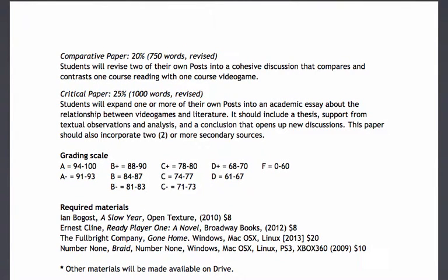The comparative paper is going to be your first major paper, due at the beginning of week five. We're going to workshop it during week five and then you'll turn in a second draft. That's going to be 750 words and you're simply asked to compare one of the course readings with one of the course video games. The critical paper will be the major paper for the course, due at the beginning of week seven as a first draft. Week eight we'll workshop it and you'll turn in a revised draft — in total it will be 1,000 words. That paper asks you to expand one of your previous posts using two secondary sources and make a claim about the relationship between video games and literature.